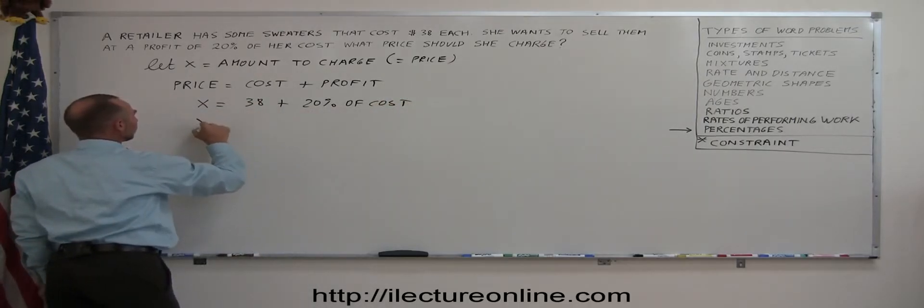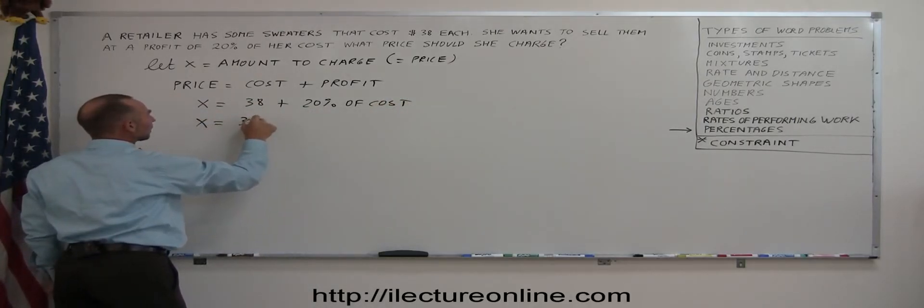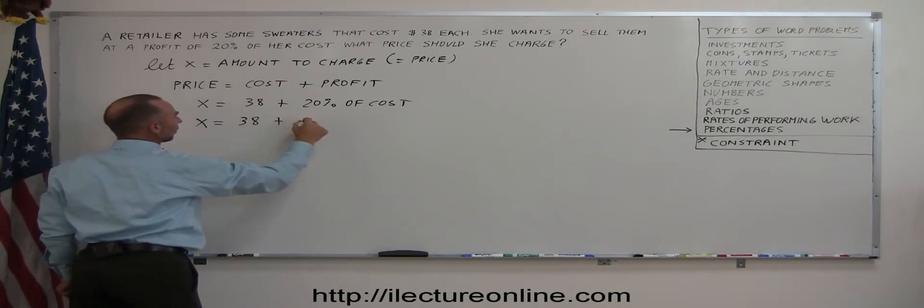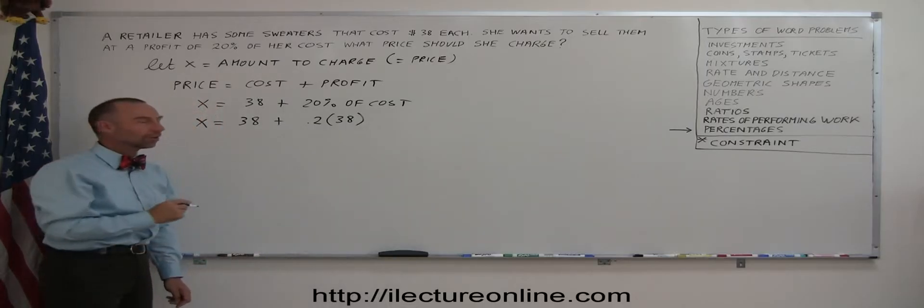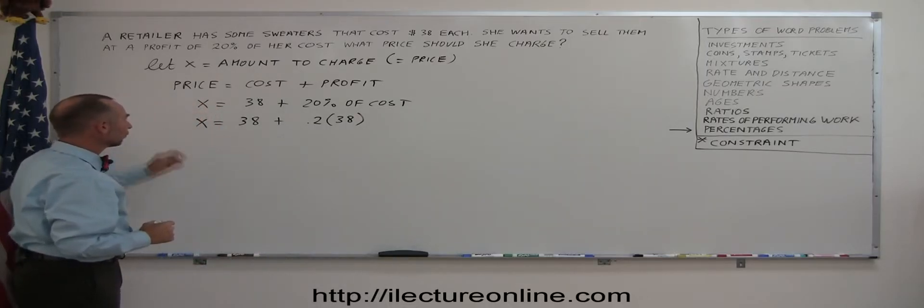And then converting that into what we know. So this is $38 for original cost plus 20%. That's 0.2 times the cost, 38. And now we're ready to solve this linear equation for the variable X.